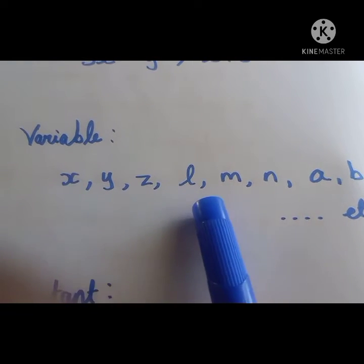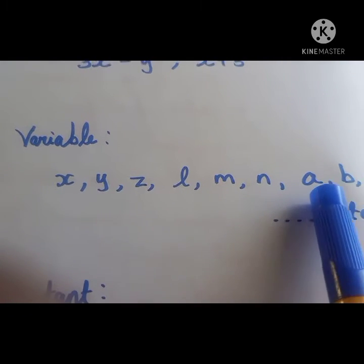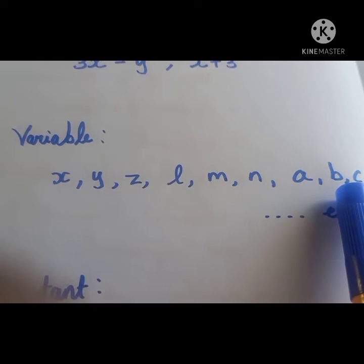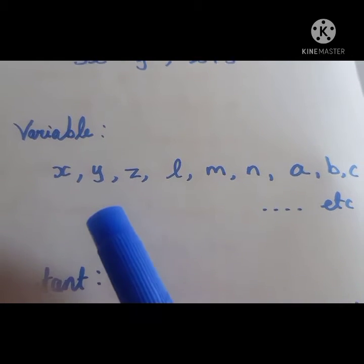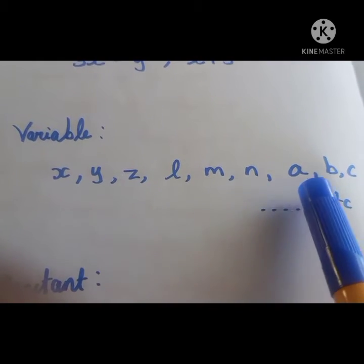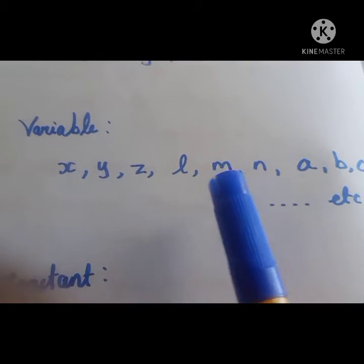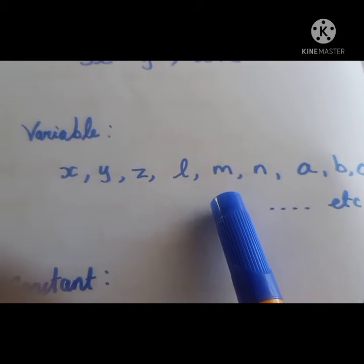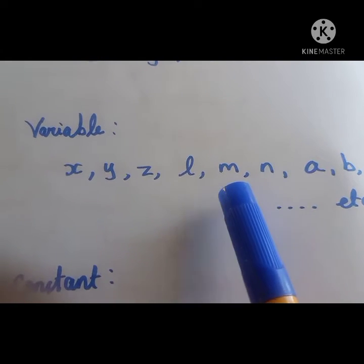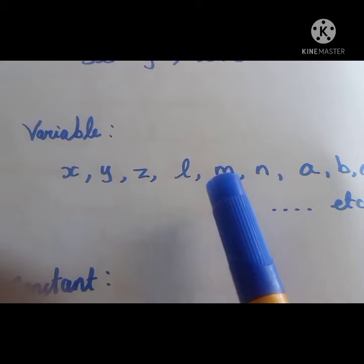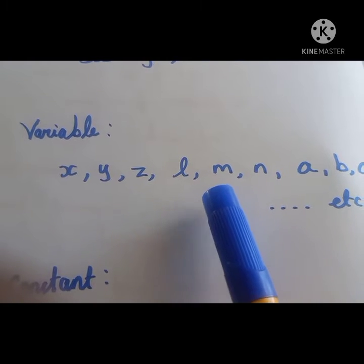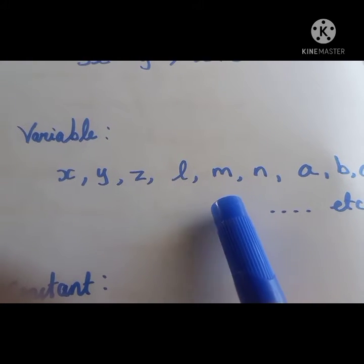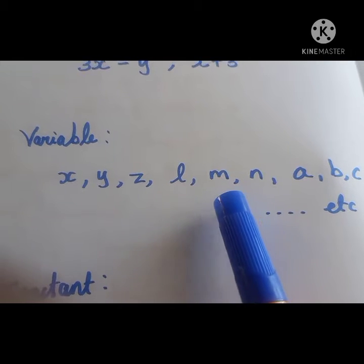We use letters to denote the variables. For example, x, y, z, l, m, n, a, b, c — these letters are called variables in the expression. A variable can take various different values; its value is not fixed.